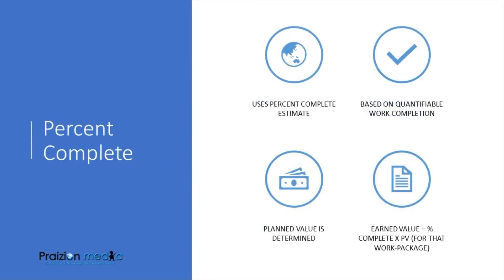The next one is percent complete, which we know well in the world of the PMI. The percent complete method shows an estimate of the percentage of work that is complete at the end of each measurement period. This has to be used with caution — you want an expert, and the project manager or whoever is doing this needs to be working with tasks that have truly been completed and measured to the best of their ability.